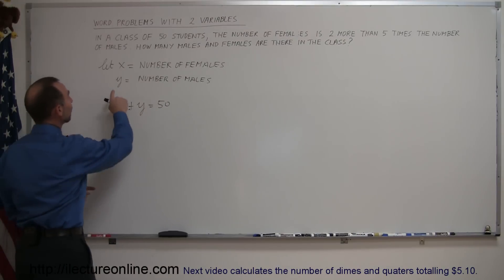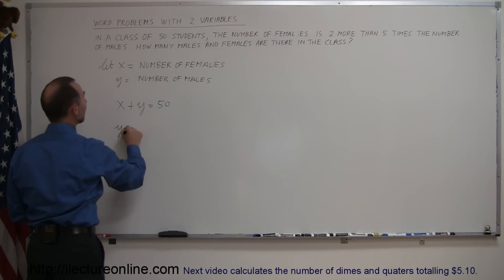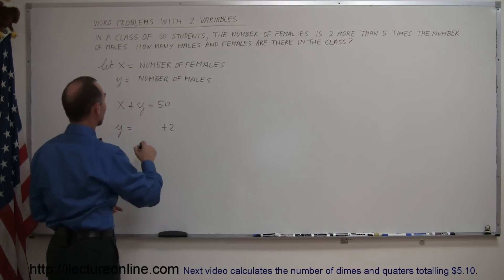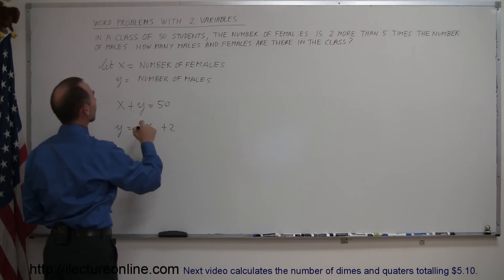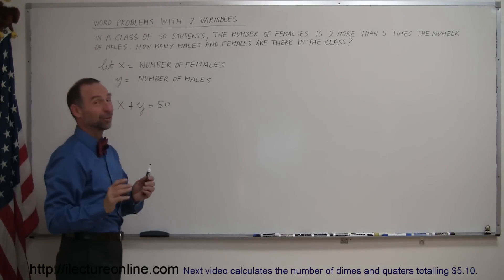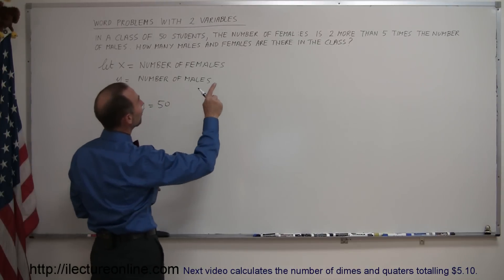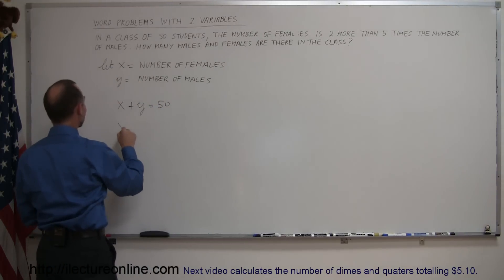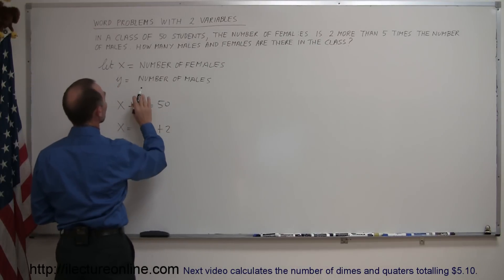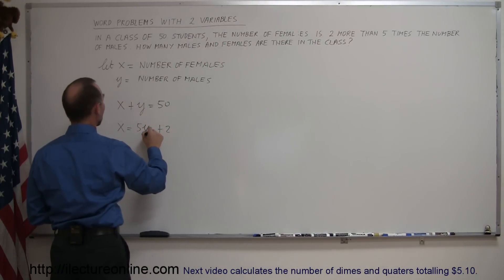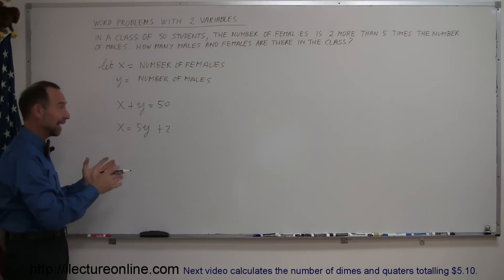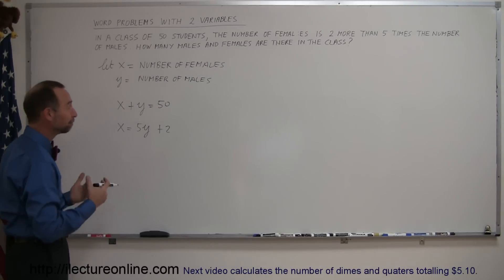Then it says the number of females is two more than five times the number of males. I initially wrote y equals 5x plus 2, but that's wrong — and this is exactly why it's so important to carefully define your variables. The number of females is x, so the correct equation is x equals 5y plus 2, where y is the number of males.